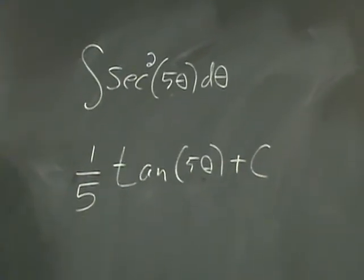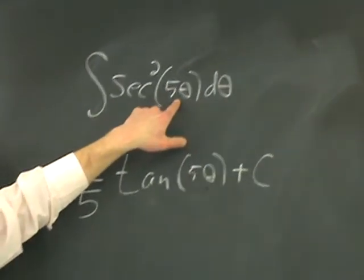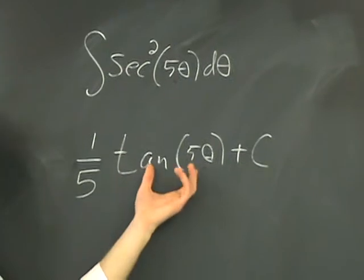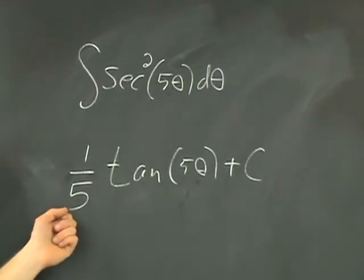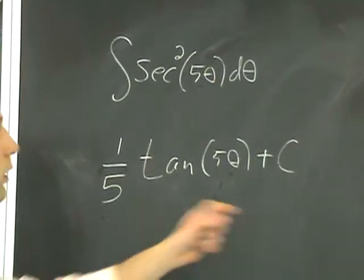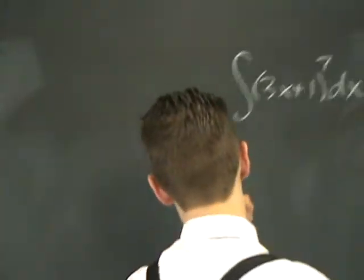So you just have to kind of see past that, and then you offset it. Because if it's 5 theta, you're going to carry it out the same way, but divide by that factor of 5 before you finish it off. So this thing here would be the next example.